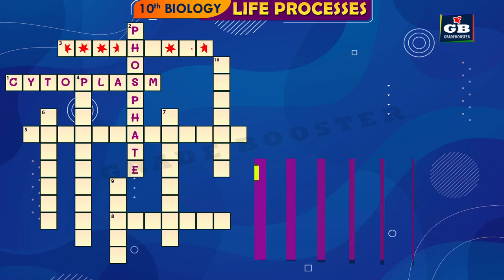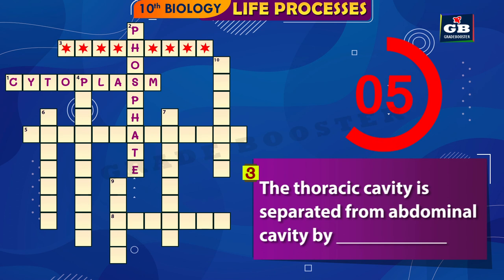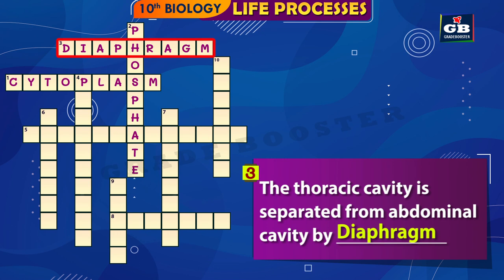3 Across: The thoracic cavity is separated from the abdominal cavity by dash. The answer is diaphragm. The thoracic cavity is separated from the abdominal cavity by the diaphragm.